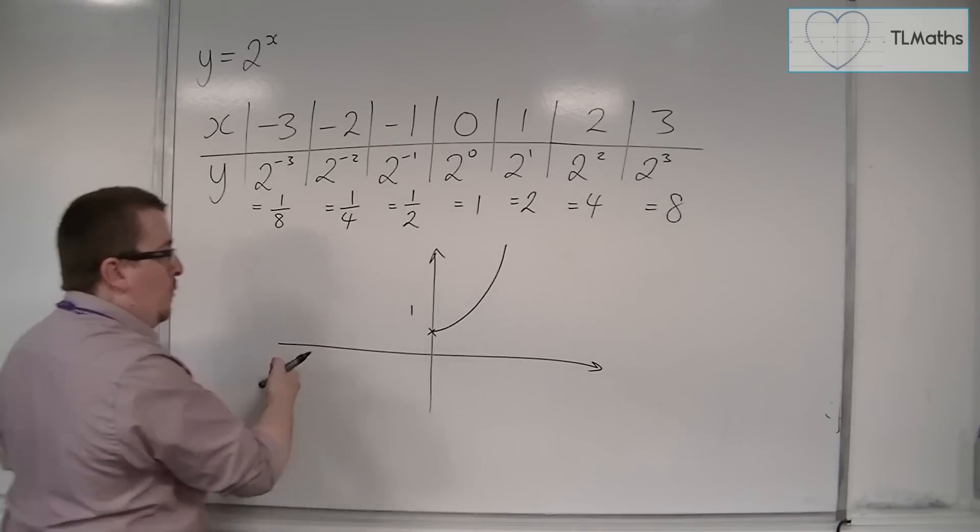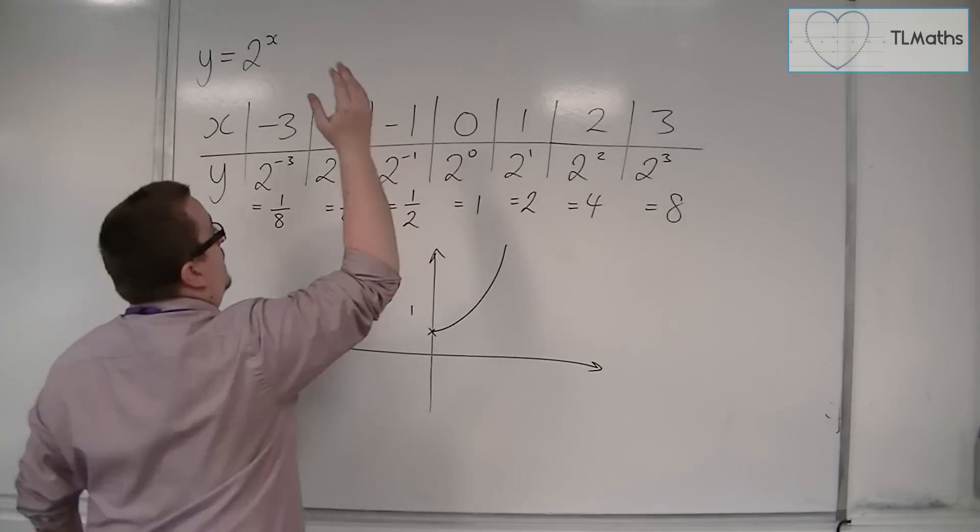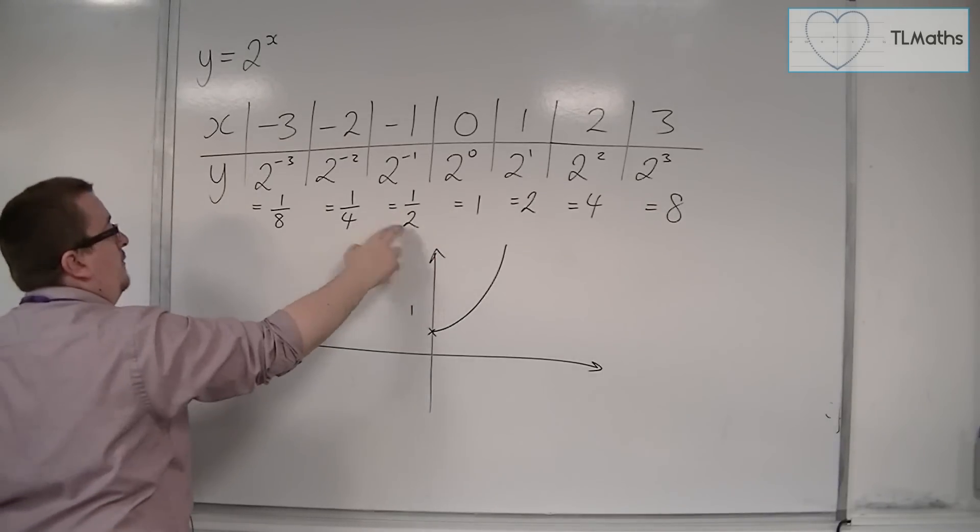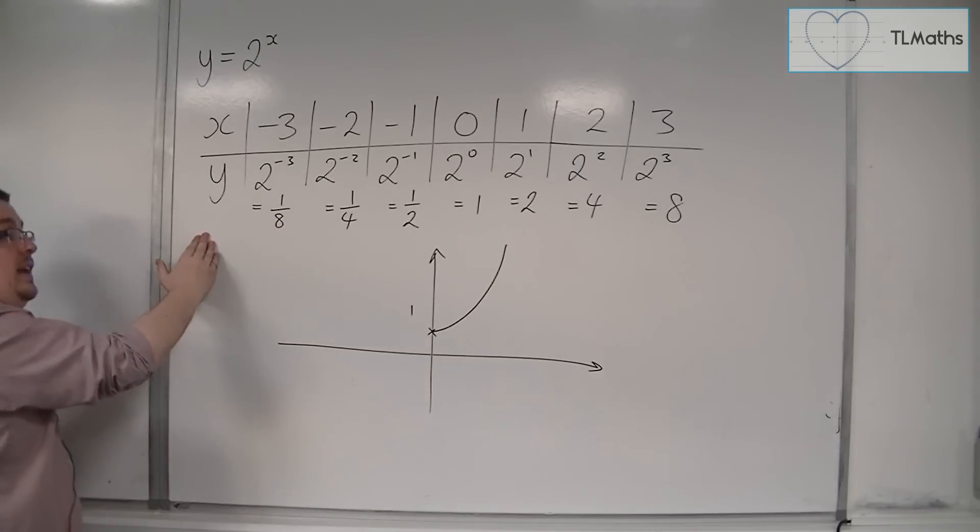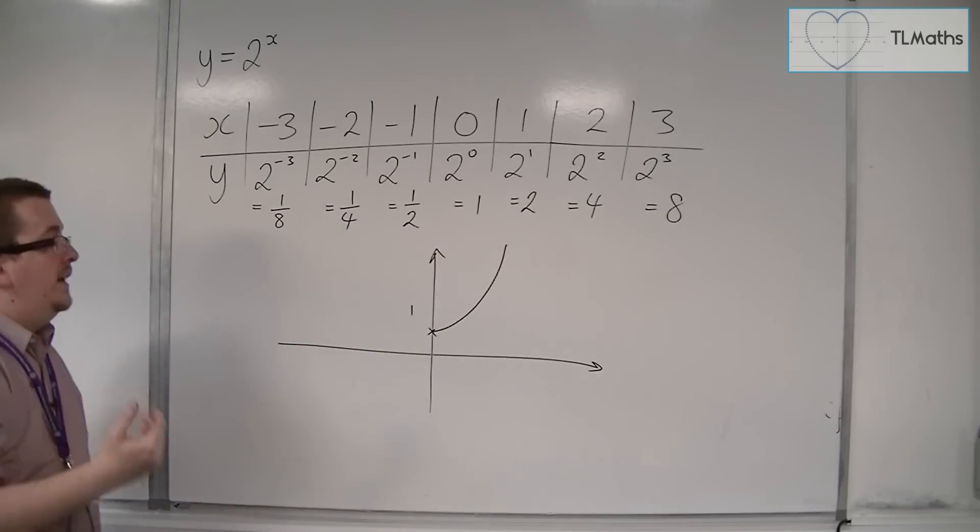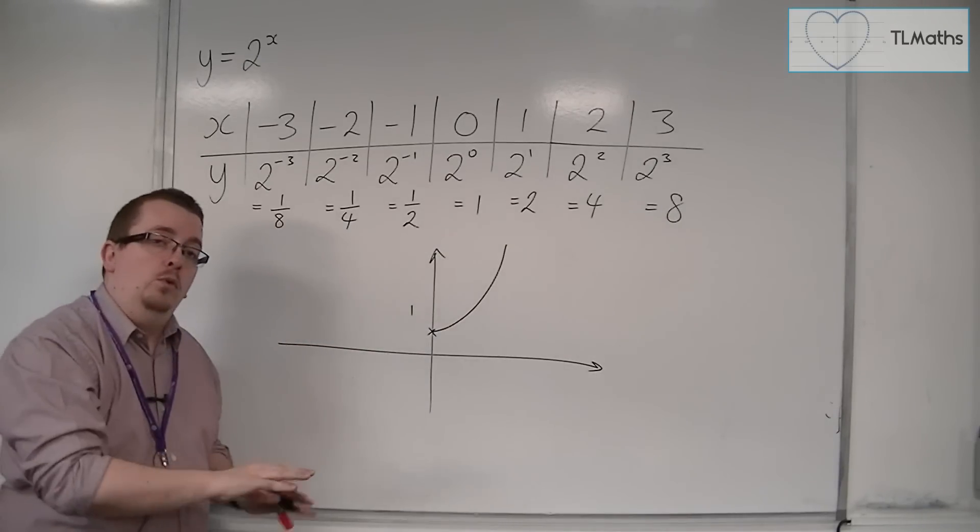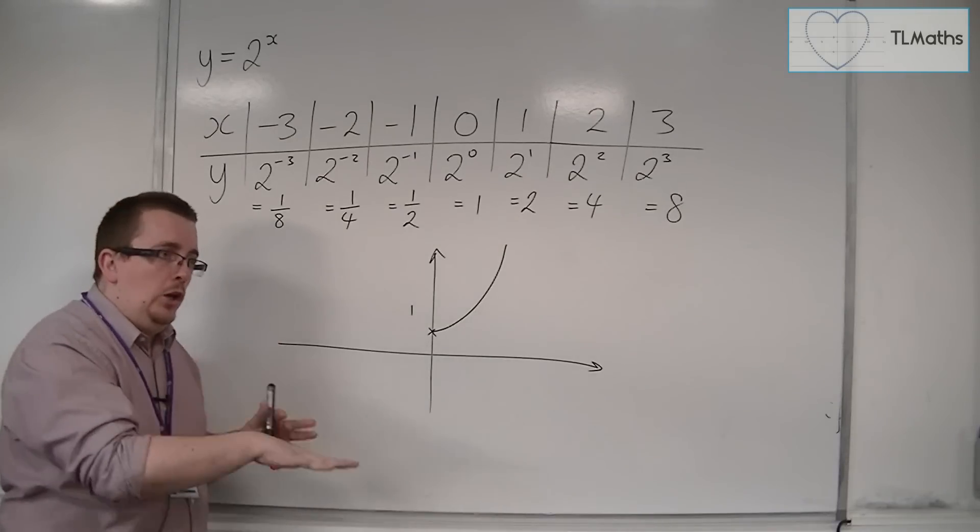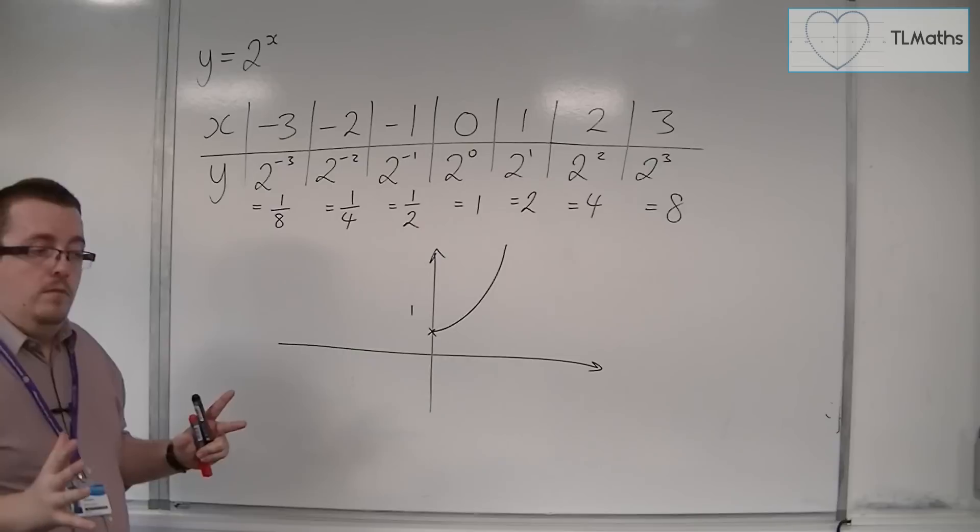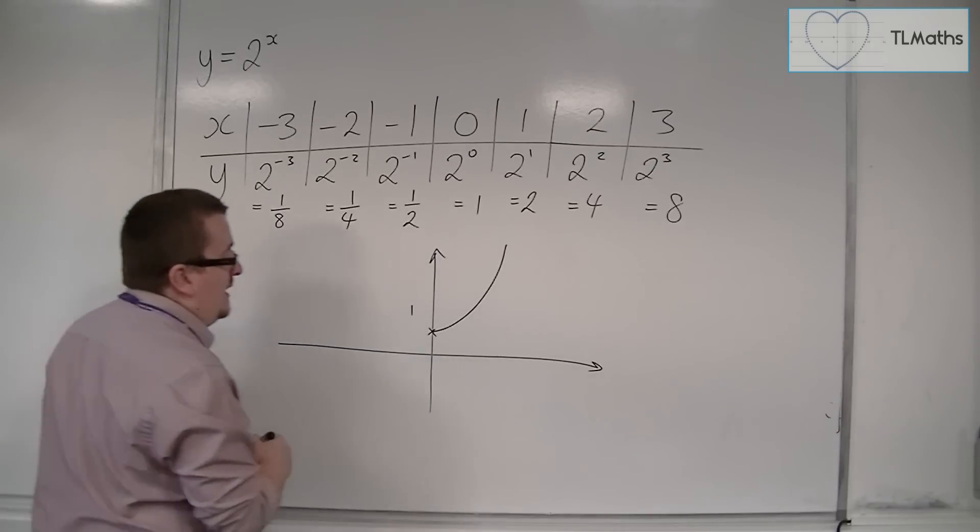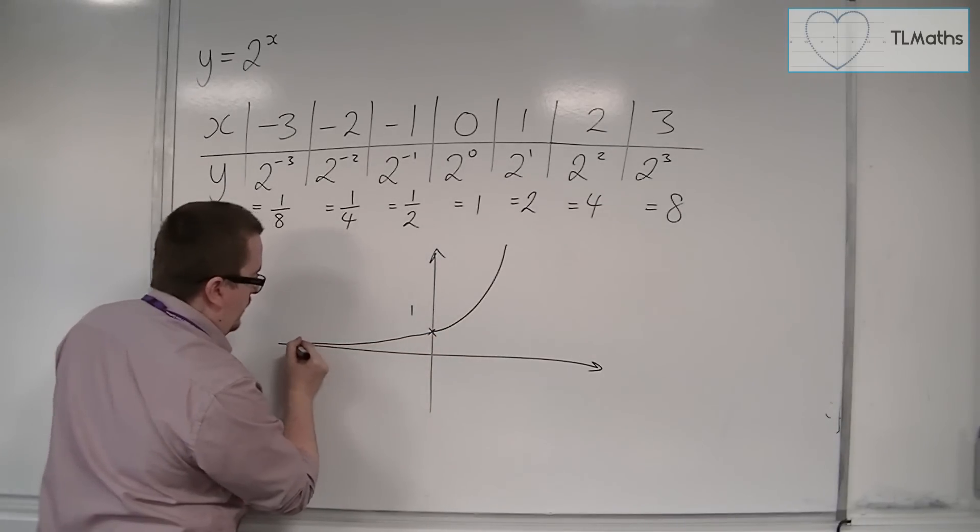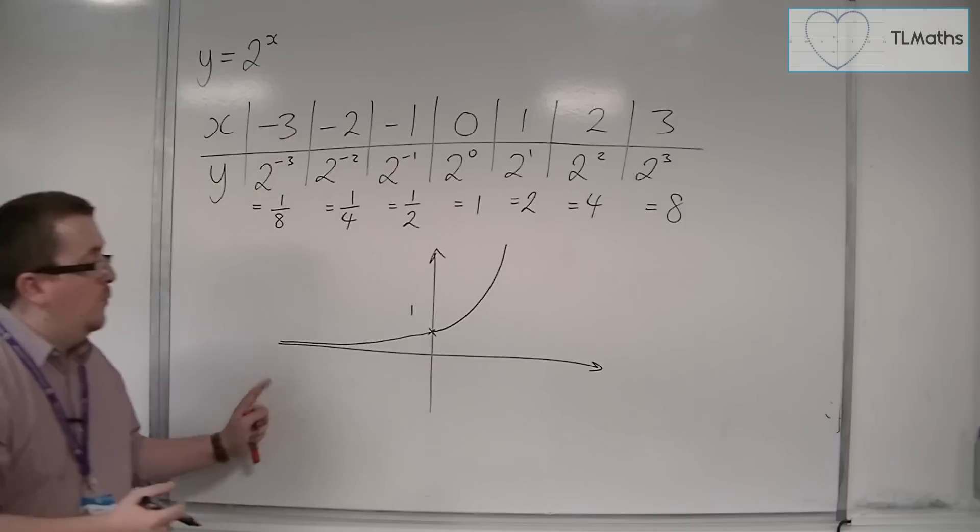To the left of the y-axis, when we go from minus 1 to minus 2 to minus 3, the y value is going from a half to a quarter to an eighth. Then it will be a 16th, then a 32nd, then a 64th, then a 128th, then a 256th. It's getting small very quickly and getting closer and closer to 0. But it will never quite reach it. The curve must decrease towards 0 to the left of the y-axis.